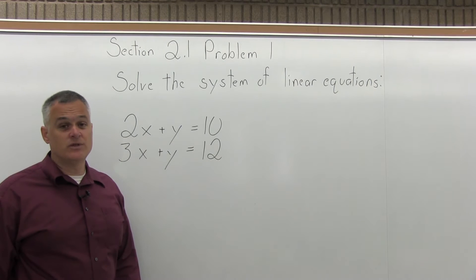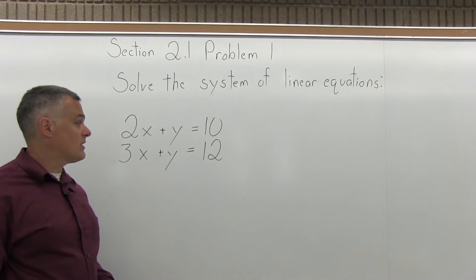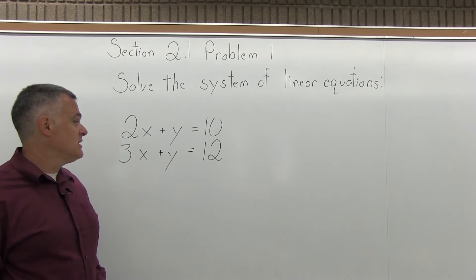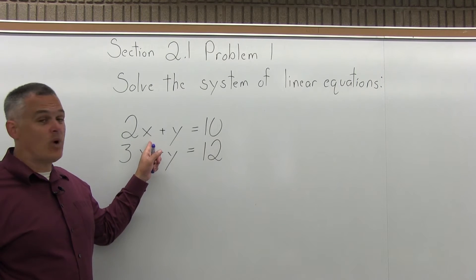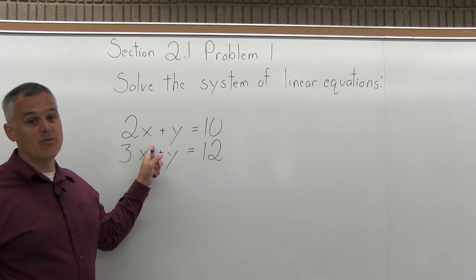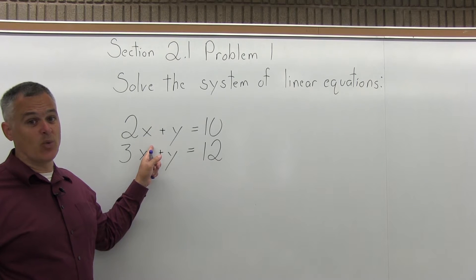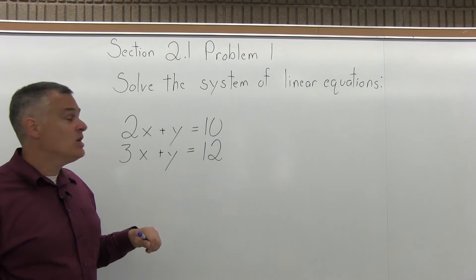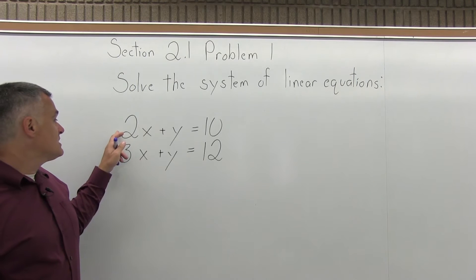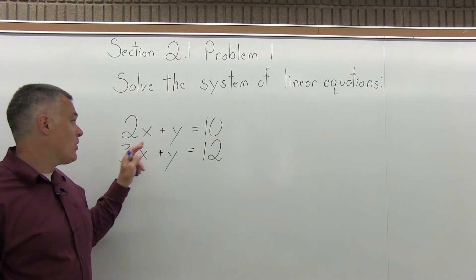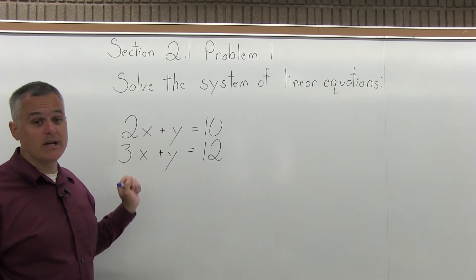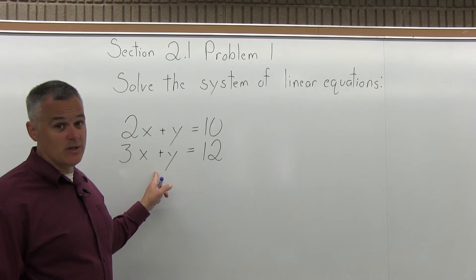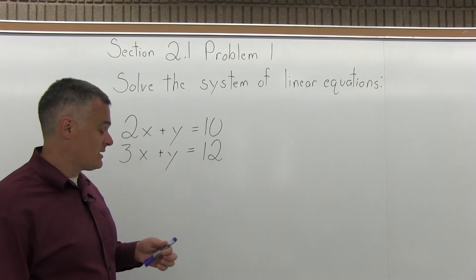So we want to solve that. If you see the graph, you want to find the point where they intersect. There are 4 steps. Step 1: multiply one or both equations times some values so that one of the variables has the same number in front but with opposite signs. Our options are 6x and negative 6x, or positive y and negative y. The y's seem a little easier, so I'm going to go with the y's.